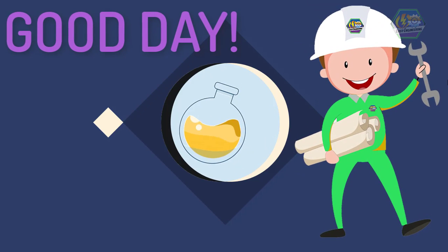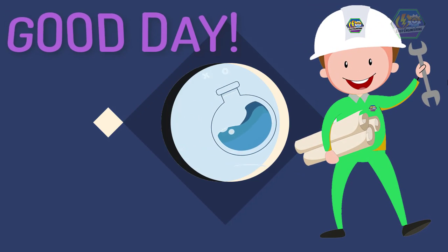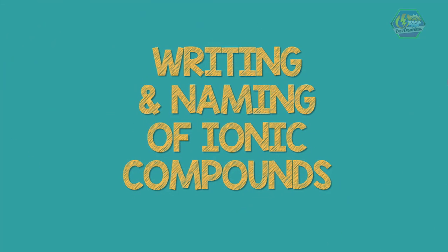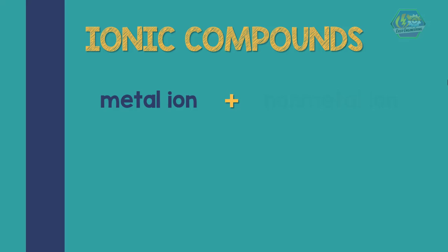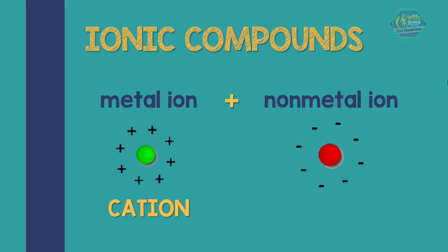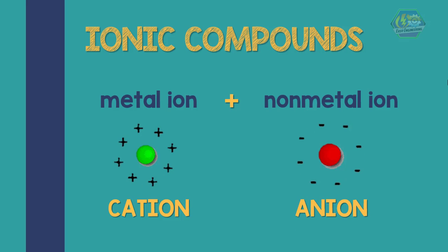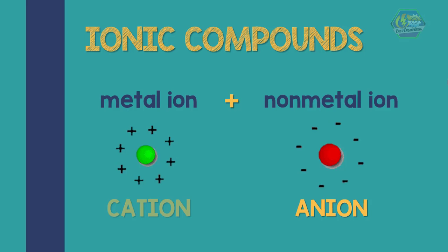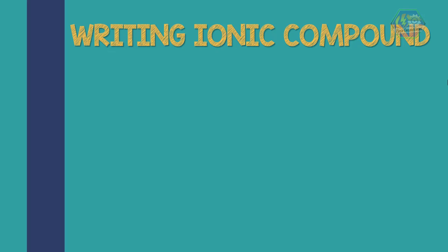Good day learners, this is Easy Engineering. This time we're going to talk about writing formulas and naming of ionic compounds. Recall that ionic compounds are metal ion plus non-metal ion. The metal ion carries a positive charge, known as a cation, and the non-metal ion carries a negative charge, known as an anion. All compounds, not only ionic compounds, are composed of cations and anions.